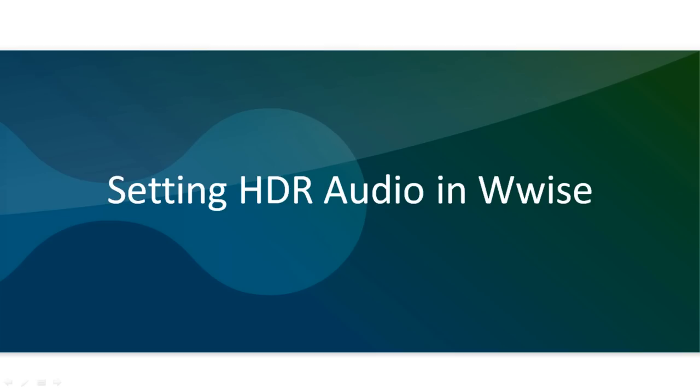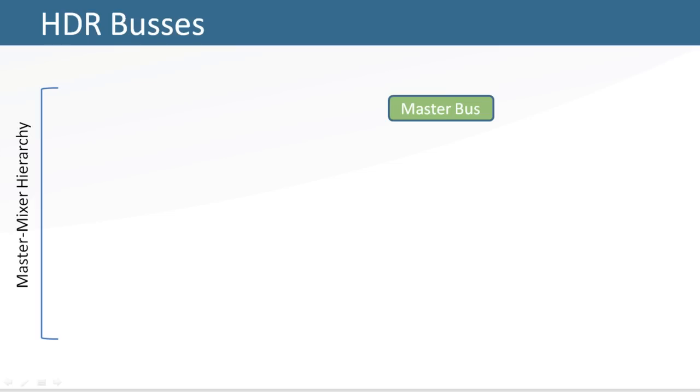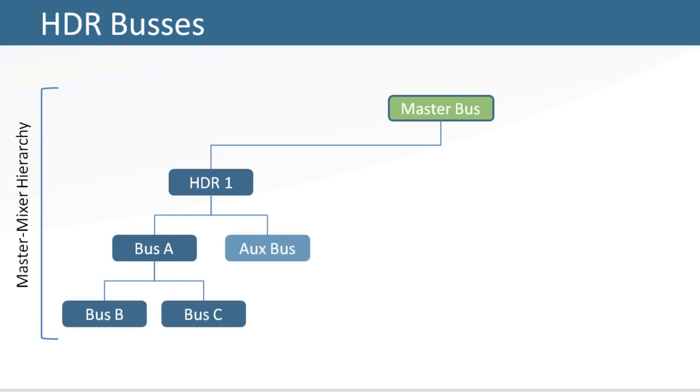To set up HDR in WISE, you need to activate at least one bus as an HDR bus. This bus will do the conversions between HDR virtual volumes and full-scale volumes. In a bus hierarchy, only the topmost bus needs to be flagged as HDR to affect all child audio and auxiliary buses contained below.